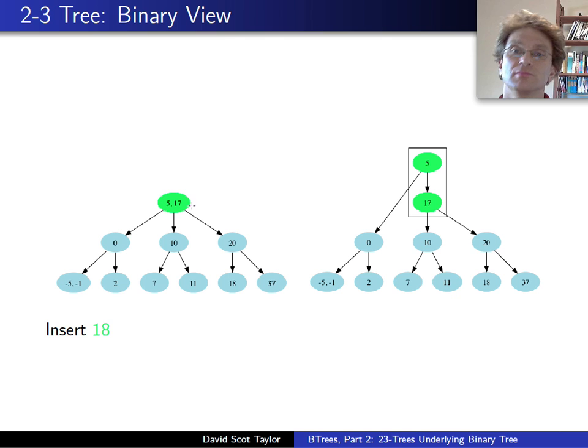And now this parent, well, the parent now has more than one key, and there we go. We can see the binary representation of this tree all the way through it. And we've now inserted 18.